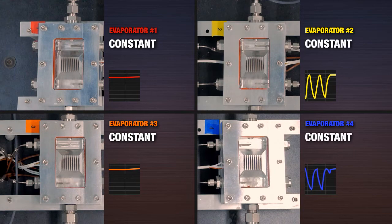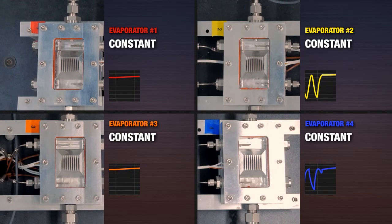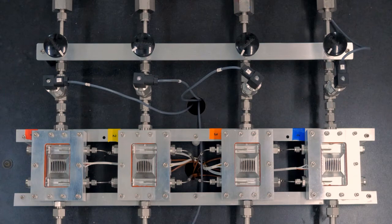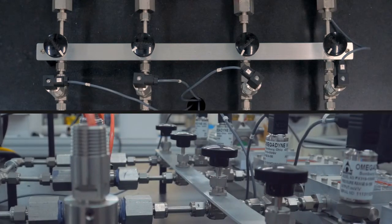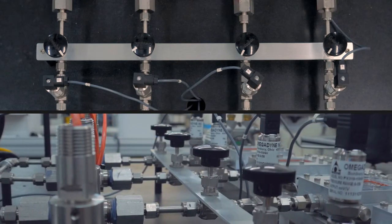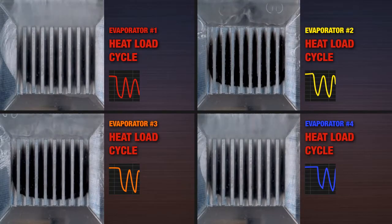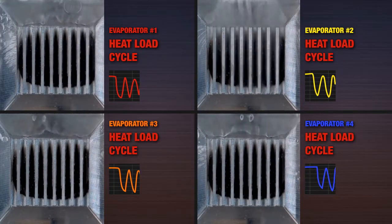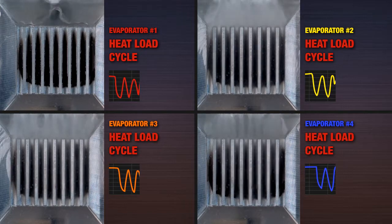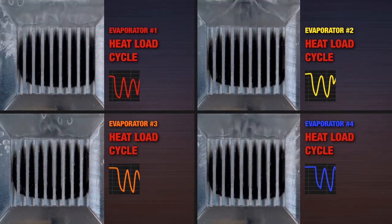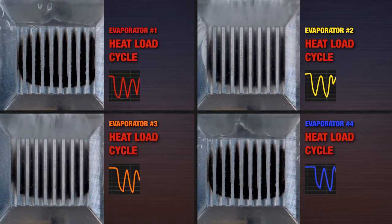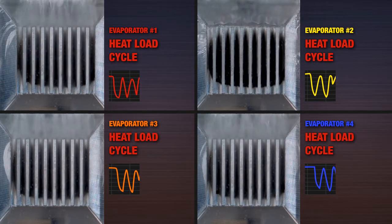Now we stop cycling the heat loads and see that all four evaporators are stable with constant heat load. A key feature that enables this flexibility was achieved by placing flow restrictors in front of the evaporators. We can ensure that each of the evaporators receives the appropriate amount of coolant. This allows the performance of the other evaporators to remain unchanged as heat is applied to different evaporators at different times, ensuring that each evaporator provides adequate cooling to the device as the other devices turn on and off.